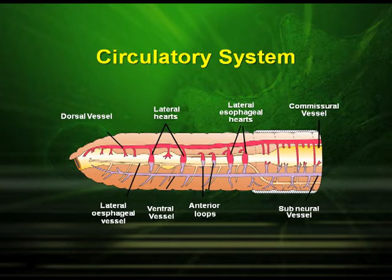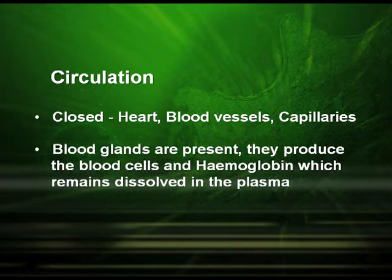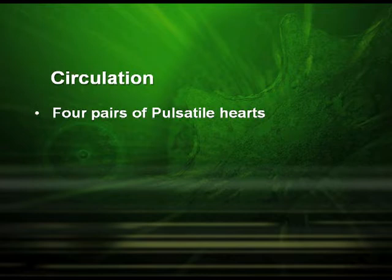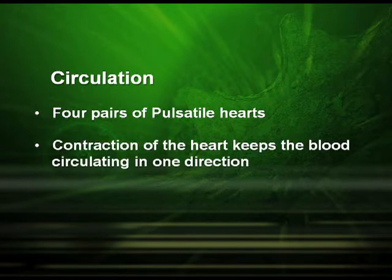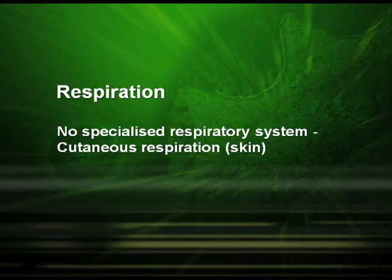Regarding the circulatory system, earthworms have a closed circulatory system consisting of the heart, blood vessels, and capillaries. Blood glands are present and they produce blood cells and hemoglobin, which remains dissolved in the plasma. They have four pairs of pulsatile hearts, and the contraction of the heart keeps blood circulating in one direction. The blood cells are phagocytic in nature. Earthworms do not have any special respiratory system; they carry on cutaneous respiration — that is, with the help of the skin.